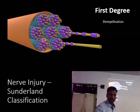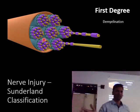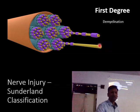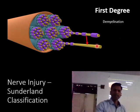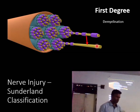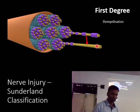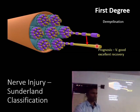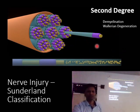In first degree injury, there is demyelination — the myelin sheath is damaged due to blunt trauma or inflammation. There is no loss of continuity of the endoneurium or the axon; only the myelin sheath is disrupted. Since both the endoneurium and axon are intact, the prognosis is excellent and full recovery occurs within one to three months.